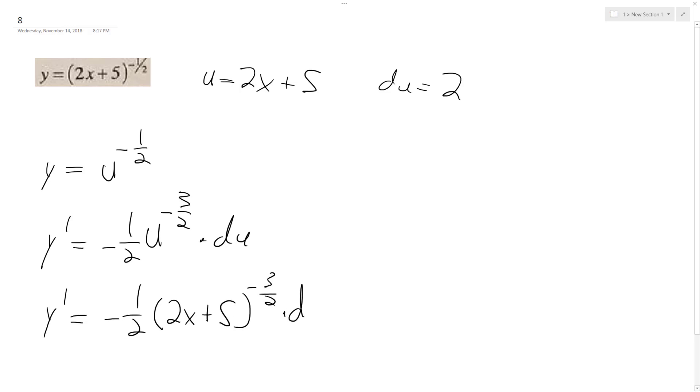The 2 cancels out, so we're simply left with negative 2x plus 5 raised to the negative 3 halves.